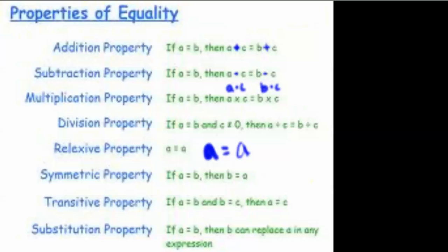The substitution property: if a equals b, then b can replace a in any expression. Keep in mind these properties because you're going to need to memorize them and understand them well in order to write proofs.